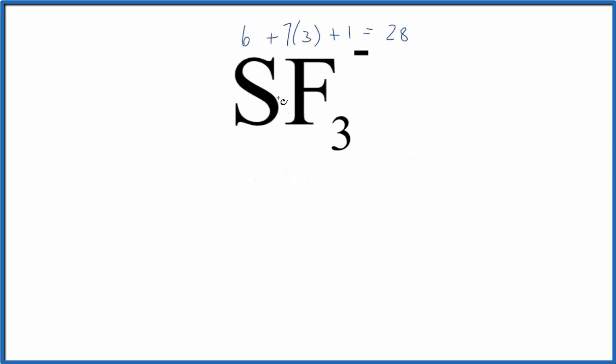Sulfur is the least electronegative atom, we'll put that at the center, and then we'll put three fluorine atoms around it.